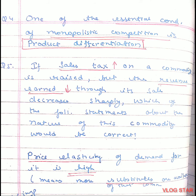Question 5. If sales tax on a commodity is raised but the revenue earned through its sales decreases sharply, which of the following statements about the nature of this commodity would be correct? Here, sales tax is increasing and the revenue earned through it is decreasing. This means that more substitutes of that commodity are available in the market, which is resulting in decreasing revenue. This means the price elasticity of demand for it is high.